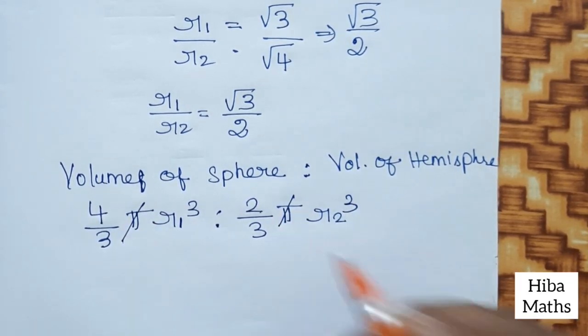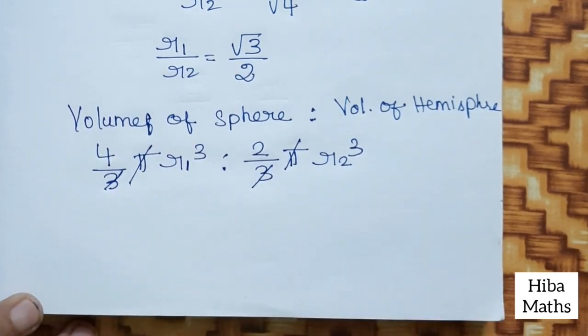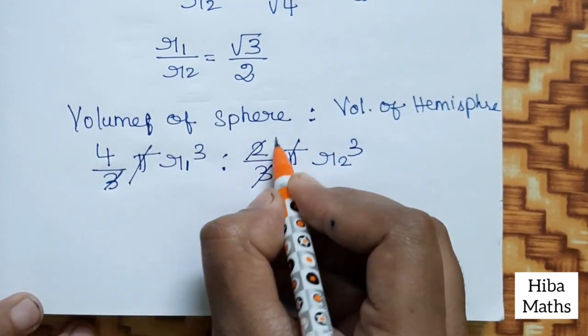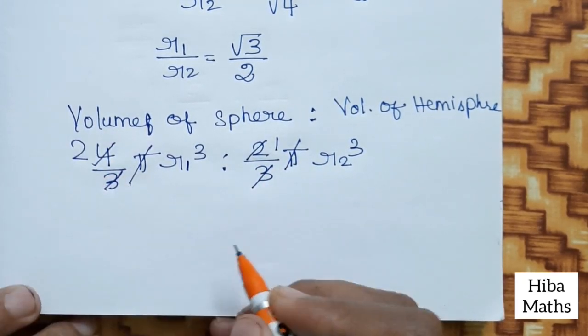Pi pi cancel, 3 3 cancel. Balance 2: 2 times 2 is 4.